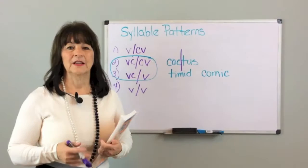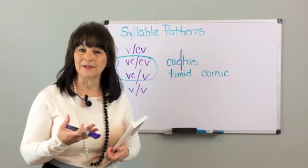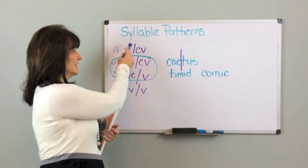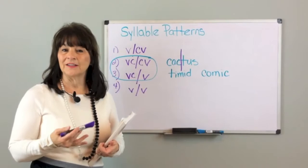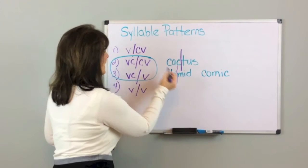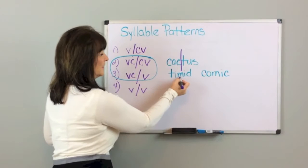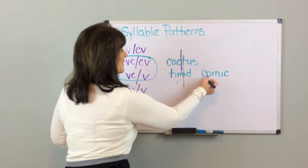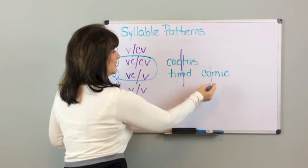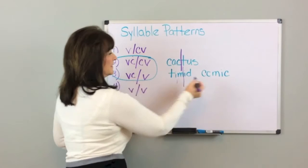For the vowel-consonant-vowel pattern, teach your students to try separating the syllables with the vowel slash consonant-vowel first. If it doesn't sound right, then try the vowel-consonant slash vowel. For instance, in timid, try the vowel-consonant-vowel separation — timid doesn't sound right — so go to the vowel-consonant slash vowel for timid. Same thing with comic: you have a vowel-consonant-vowel, try to divide it there, and if it doesn't sound right, do the vowel-consonant slash vowel for comic.